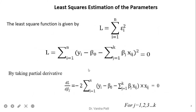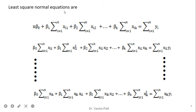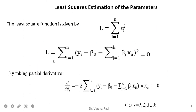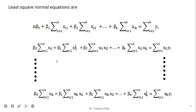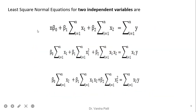We take partial derivatives with respect to beta 0 through beta k, which gives us the least square normal equations. For 2 independent variables, we get 3 equations from the basic equation. When we have 3 independent variables, the number of equations increases and we need to take the combination of those variables.